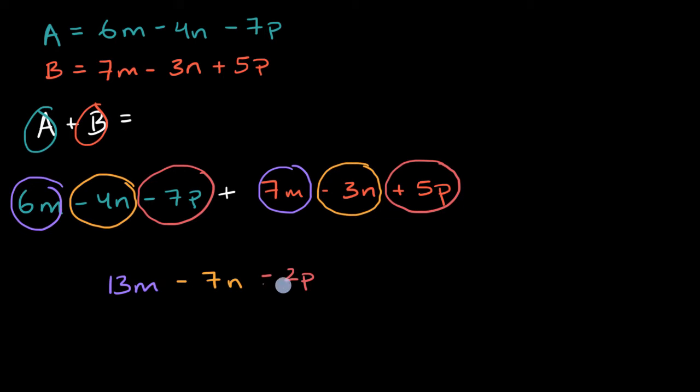And we're done. This is, you can't combine any of these because this is in terms of M, this is in terms of N, and this is in terms of P. Let's do another example here.